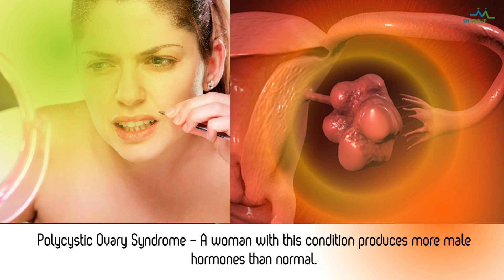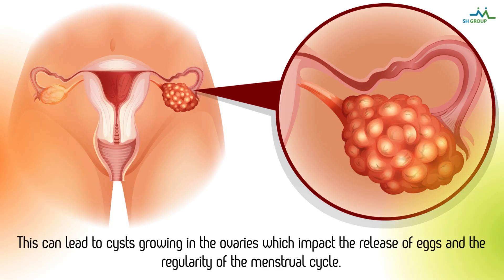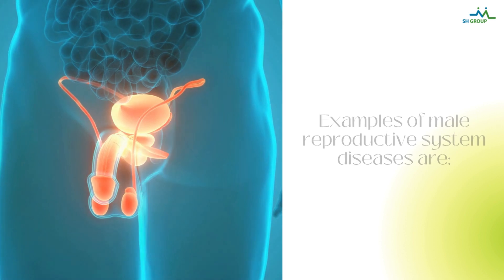Polycystic ovary syndrome — a woman with this condition produces more male hormones than normal. This can lead to cysts growing in the ovaries, which impact the release of eggs and the regularity of the menstrual cycle.